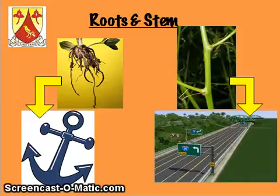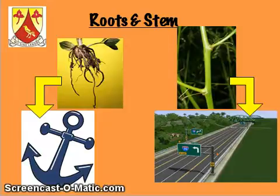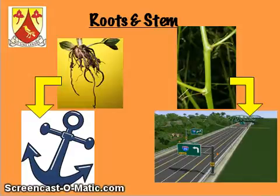The root holds the plant in the soil and it absorbs the water and the minerals. When you think of the root, think of an anchor — it anchors the plant into the soil, making sure that the plant doesn't fall over or get blown away. And while it's in the soil, it takes in all the nutrients, water, and minerals that help feed the plant. Remember your Mrs. Gren — the nutrition from Mrs. Gren, one of the life processes. So when we think of roots, we think of the anchor.